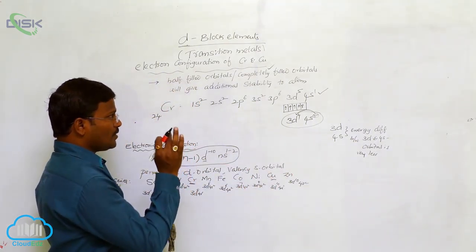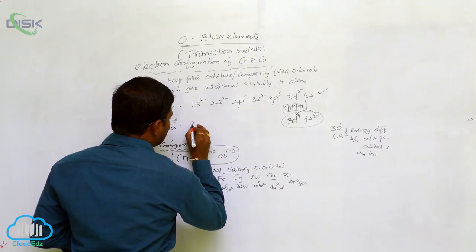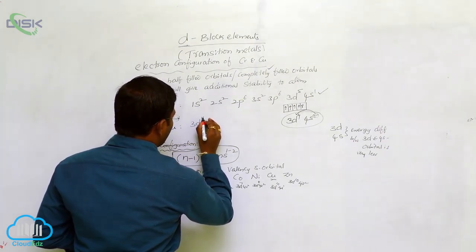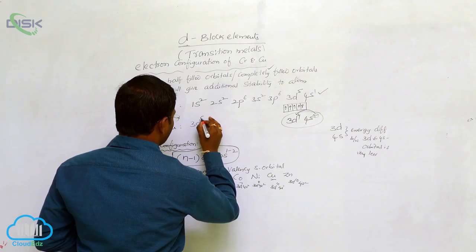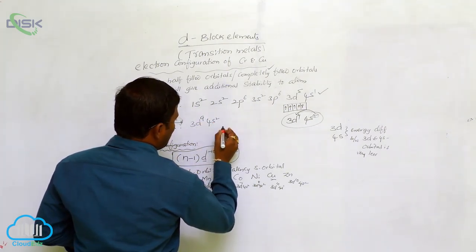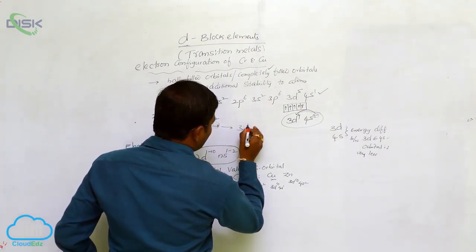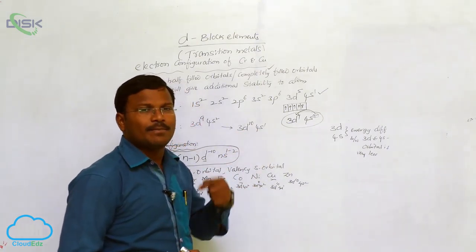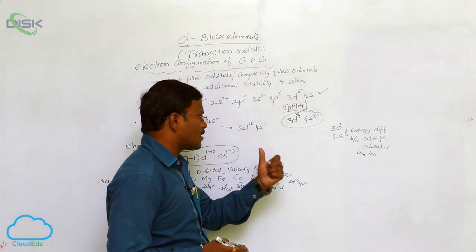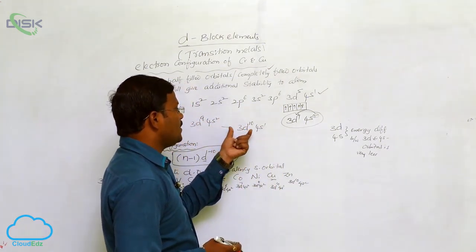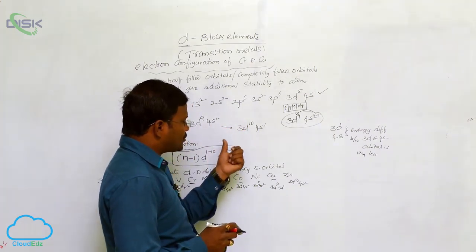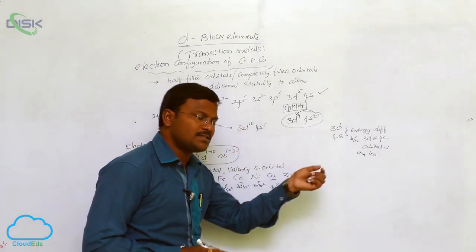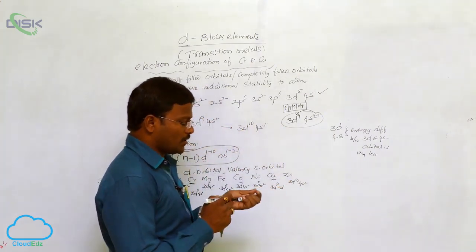In case of copper, the expected valency shell electron configuration must be 3D9-4S2, but the identified electron configuration is 3D10-4S1. Due to the less energy difference between the 3D orbital and 4S orbital, one electron from the 4S orbital jumps to the D orbital to gain stability. Hence, the present copper electron configuration is 3D10-4S1, which provides additional stability to copper.